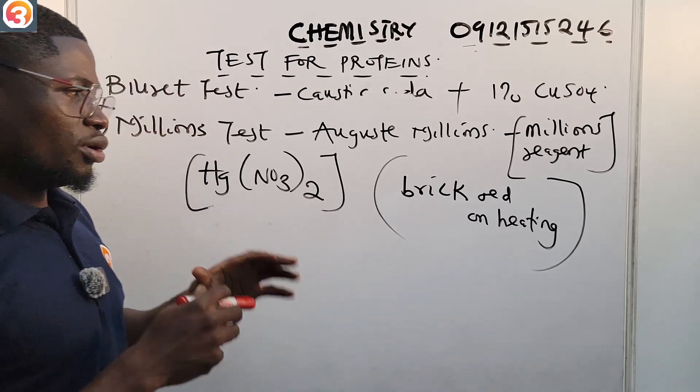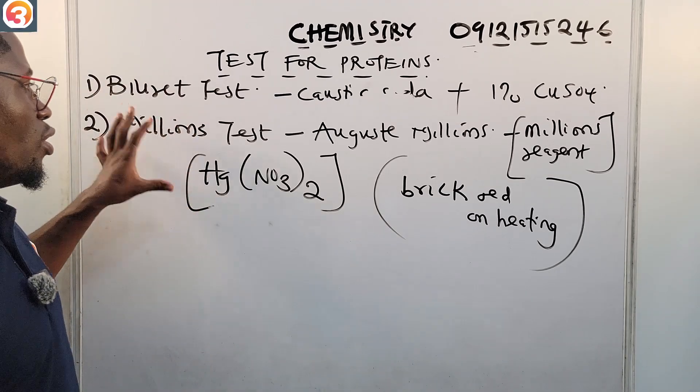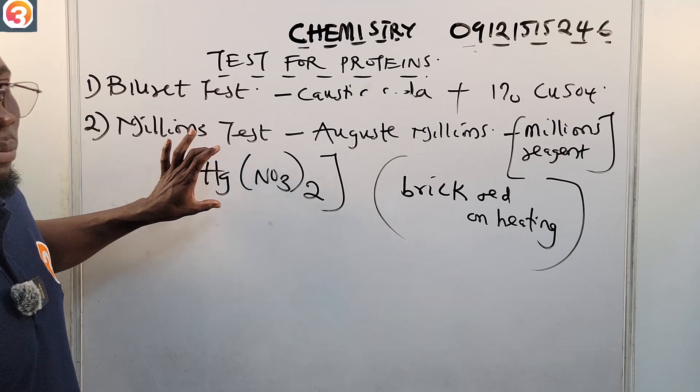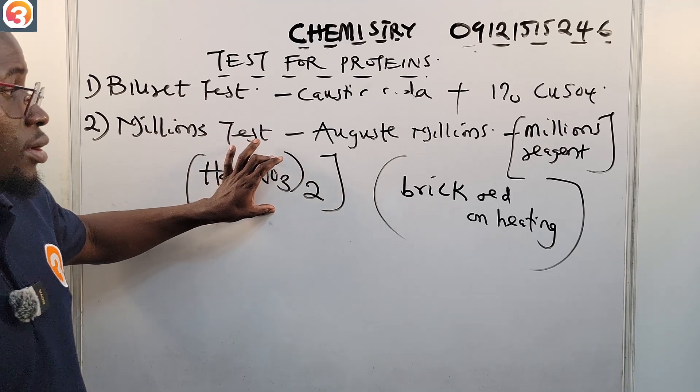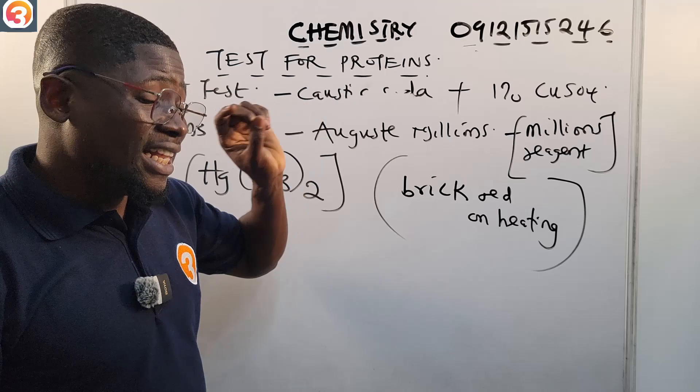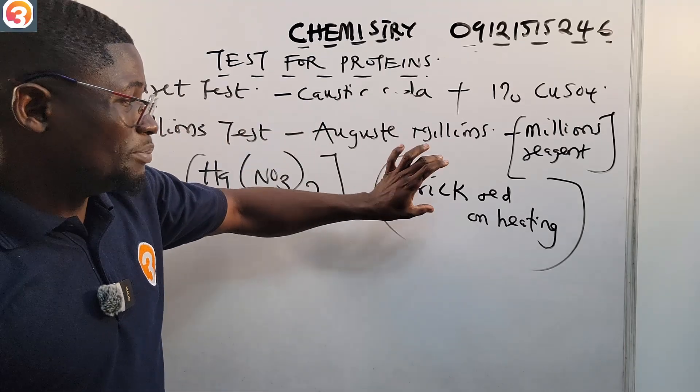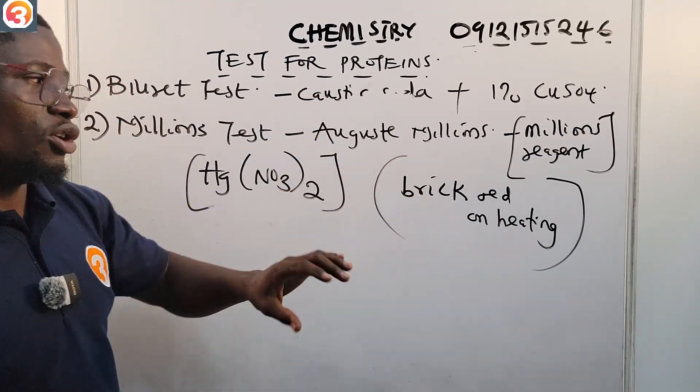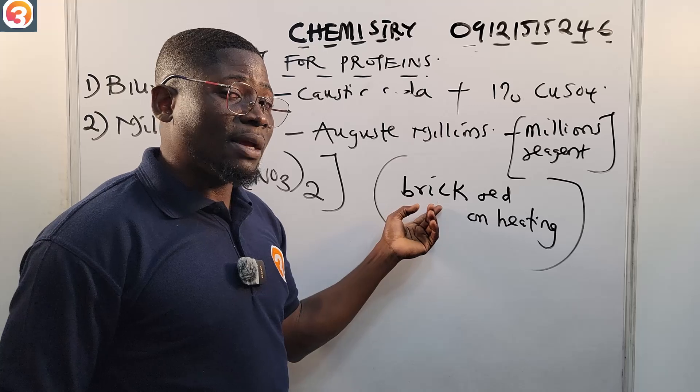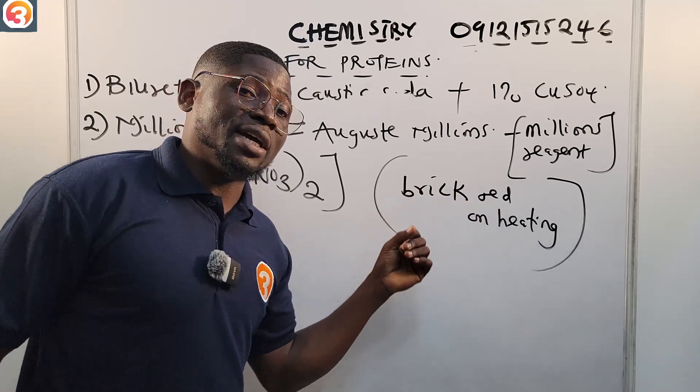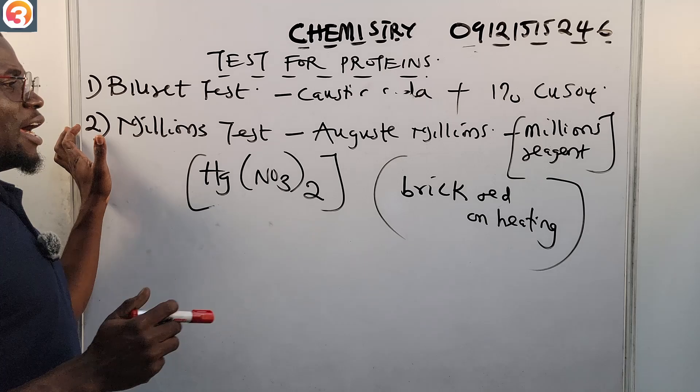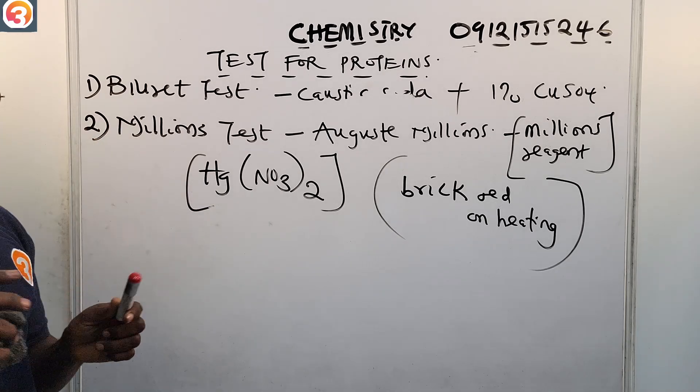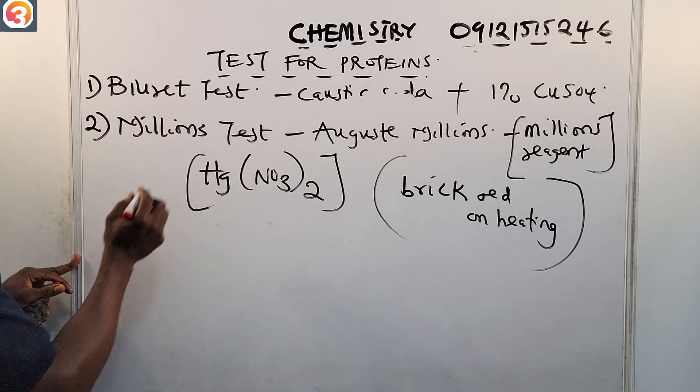For Millon's test we use metallic mercury in trioxonitrate(V), and then we observe a white precipitate which turns to brick red on heating. Or if you cannot put brick red, you cannot remember brick red, just say it turns red on heating, you will be also correct. Now the third test we are going to use to test for proteins is xanthoproteic test.